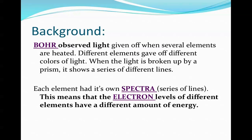So a little bit of review, we mentioned this back in concept A, that Bohr observed light given off when several elements were heated. Different elements gave off different colors of light and he could see this by breaking up the light with a prism and seeing a series of lines. He found that each element had its own spectra, series of colored lines, wavelengths. This means that the electron levels of different elements have different amounts of energy.